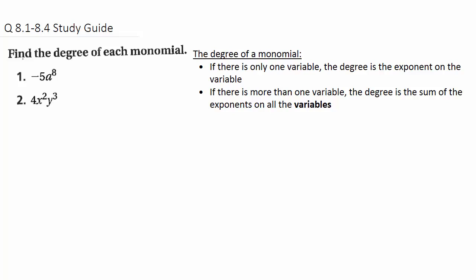The first thing you'll be asked to do is find the degree of a monomial. If the monomial has only one variable, like in number 1, it's really easy because the degree is just whatever exponent is on that one variable. So the degree would be 8 — it's an 8th degree monomial.